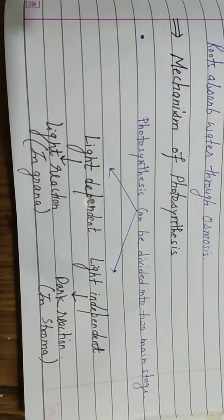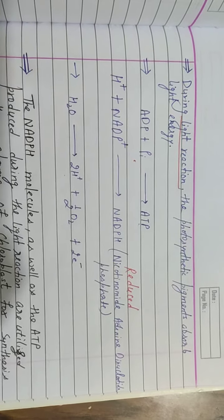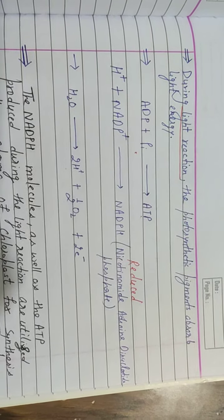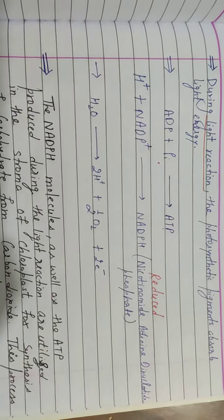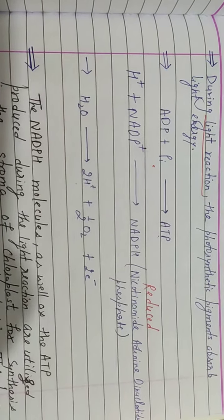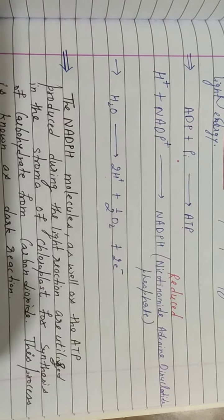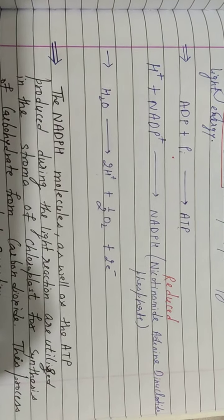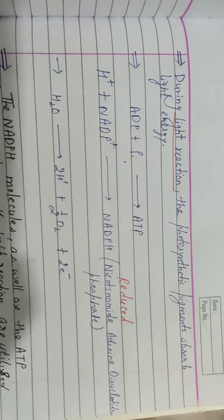During light reaction, the photosynthetic pigment absorbs light energy. Here photosynthetic pigment is obviously chlorophyll. Briefly, three reactions: first one, adenosine diphosphate ADP plus inorganic phosphate forms ATP, adenosine triphosphate, that is energy currency. Second, H2O water molecule breaks into hydrogen ion plus half molecule of oxygen and electrons.